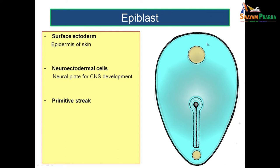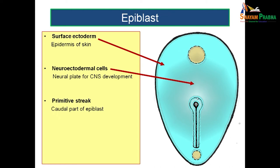Towards the caudal end, a primitive streak is formed, seen at the caudal part of the epiblast. The surface ectoderm is seen towards the periphery, the neuroectoderm towards the midline, and the primitive streak at the caudal part of the pear-shaped embryonic disc.